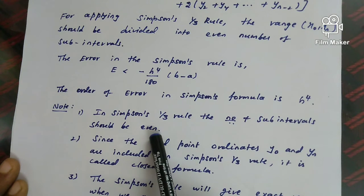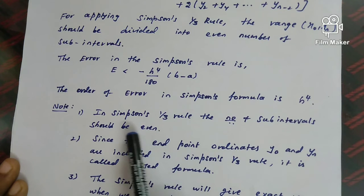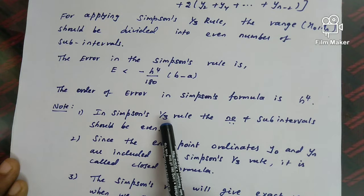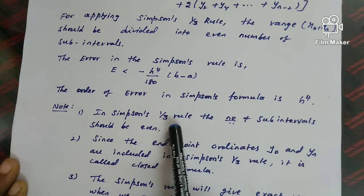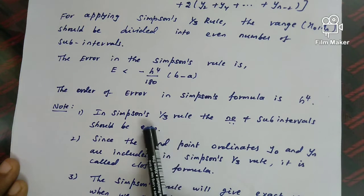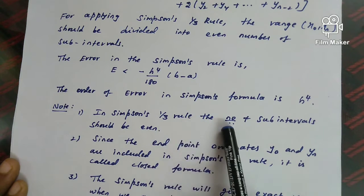Note 1: In Simpson's 1/3 rule, the number of sub-intervals should be even. So if a question asks 'what is the restriction on intervals of Simpson's rule?', the answer is: the number of sub-intervals should be even.